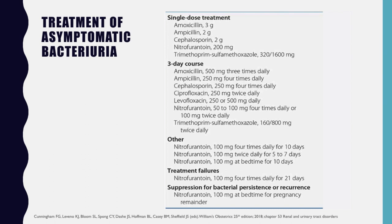For the treatment of asymptomatic bacteriuria, we have single-dose treatment options: amoxicillin 3 grams, ampicillin 2 grams, cephalosporin 2 grams, nitrofurantoin 200 milligrams, and trimethoprim-sulfamethoxazole 320/1,600 milligrams as a single dose.